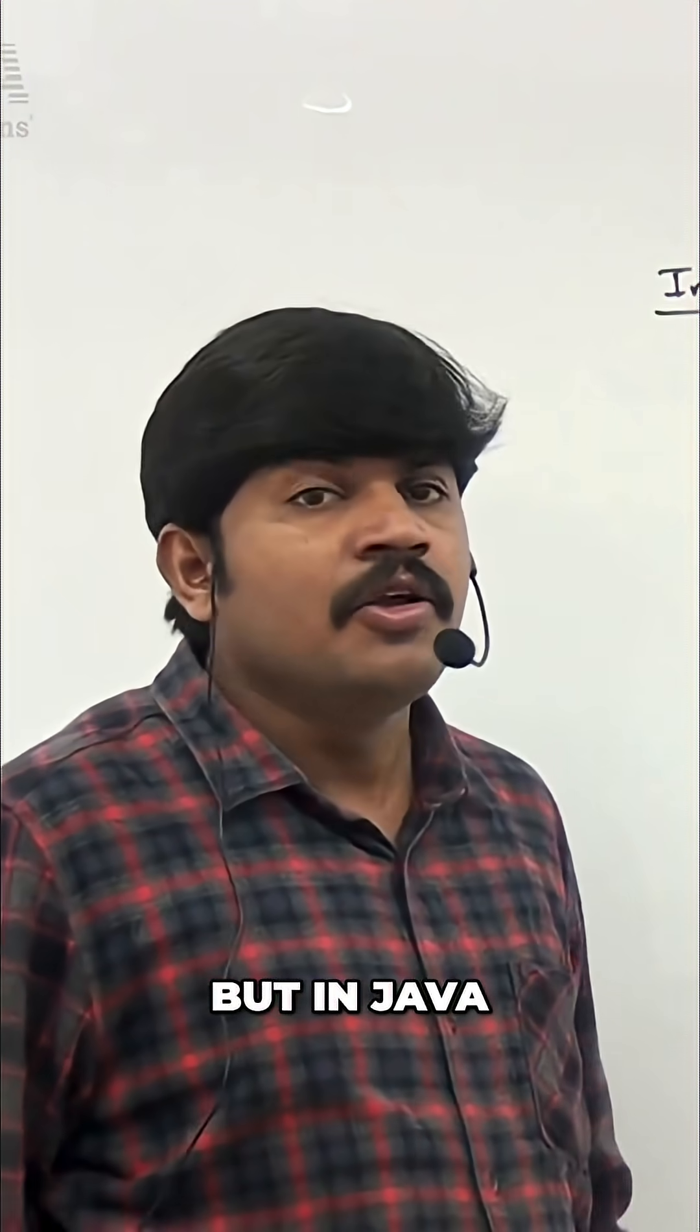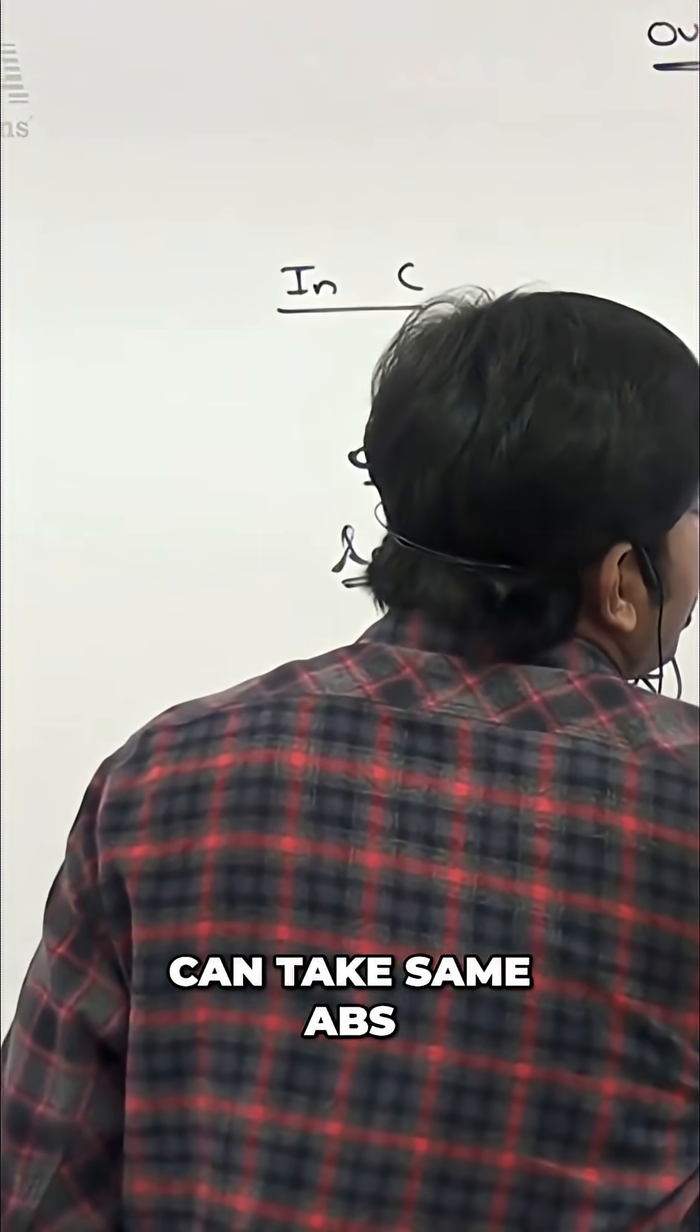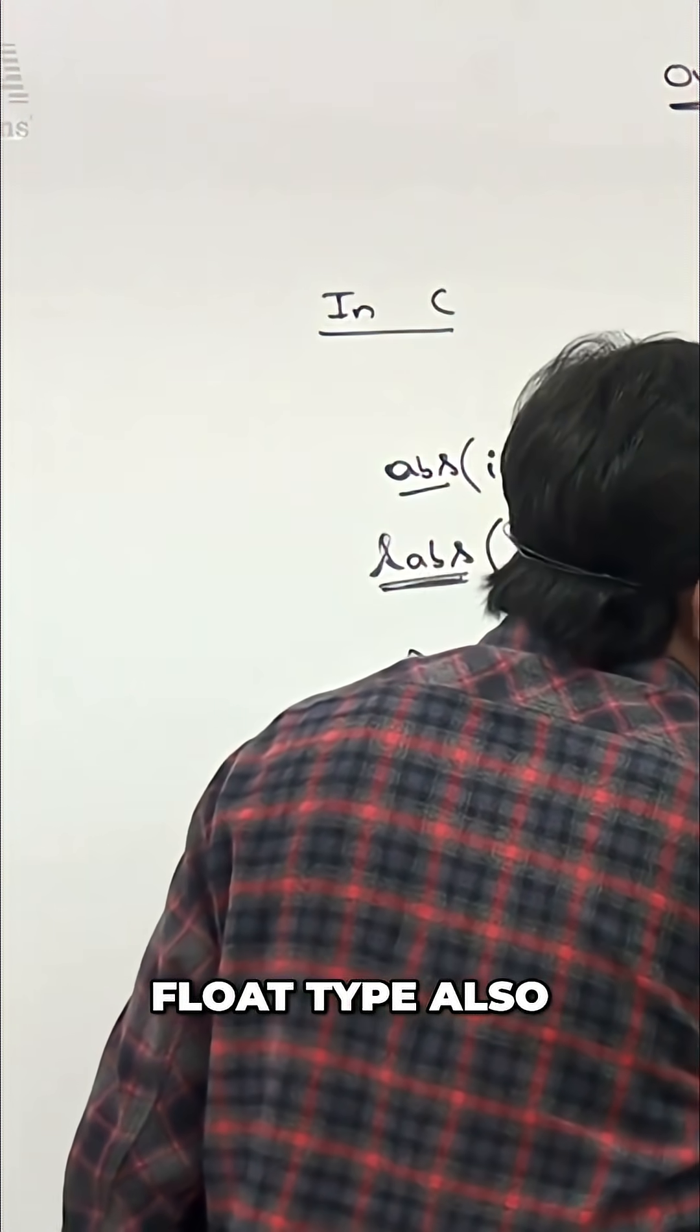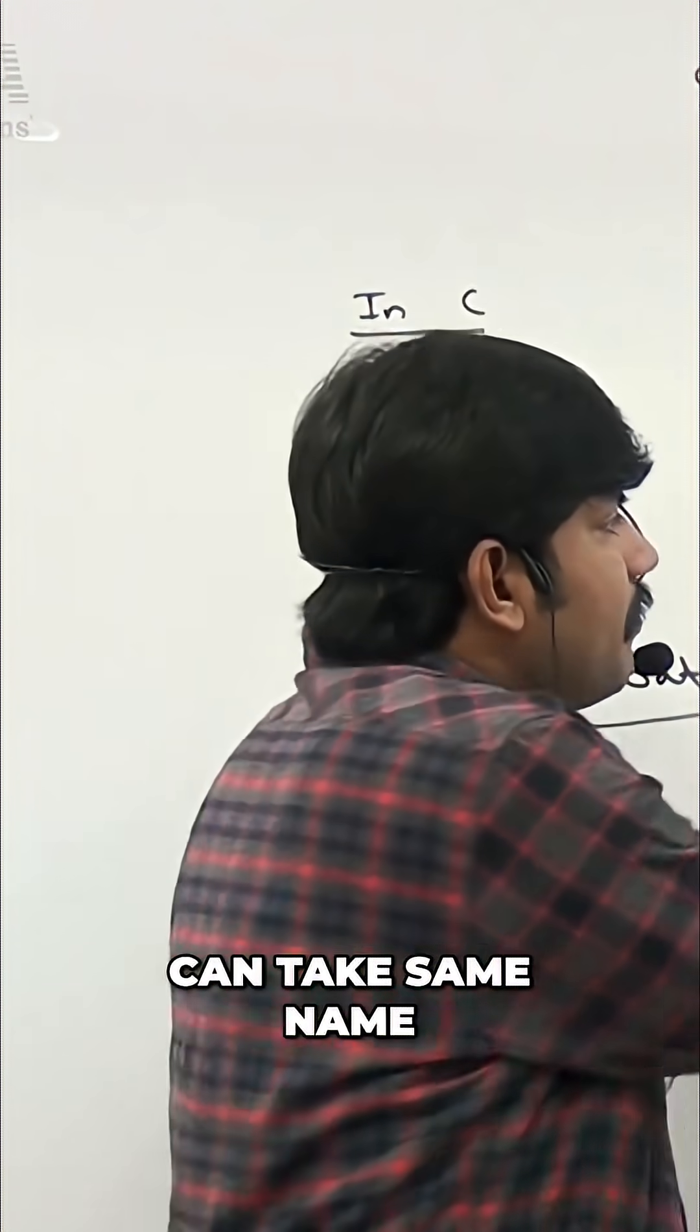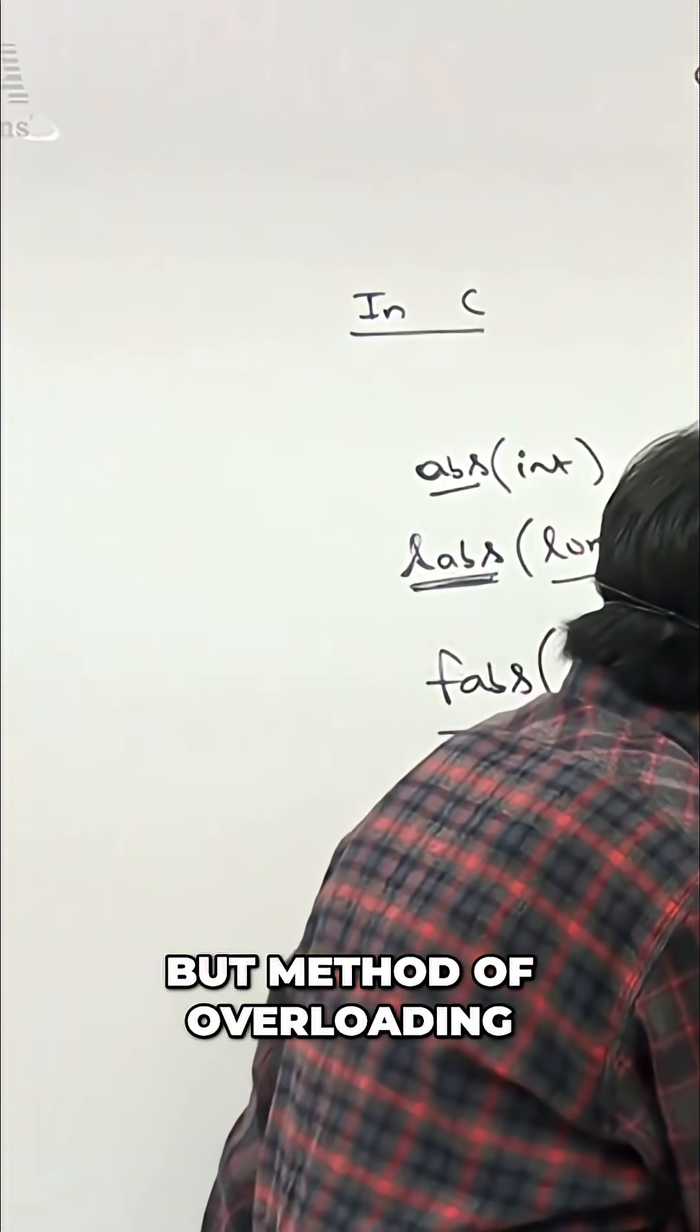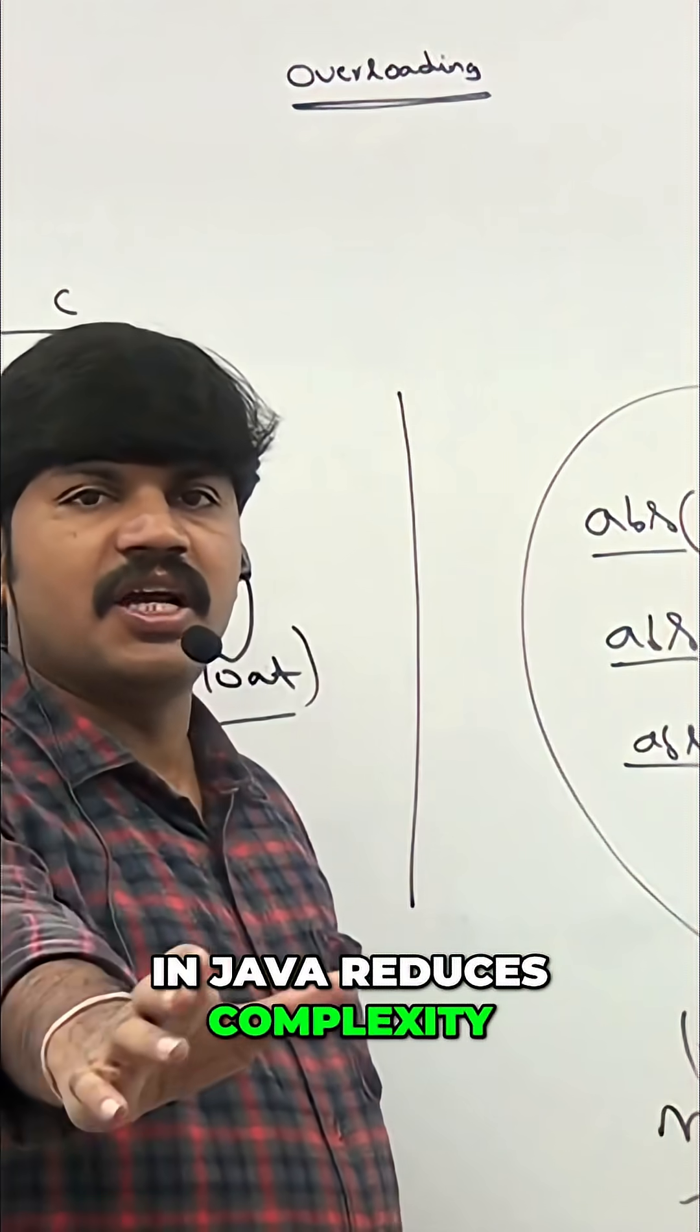But in Java, we are not having any such type of complexity. In Java, you can take the same abs method for int type, same abs method for long type, same abs method for float type also. In Java, we can take multiple methods with the same name with different argument types, which is nothing but method overloading.